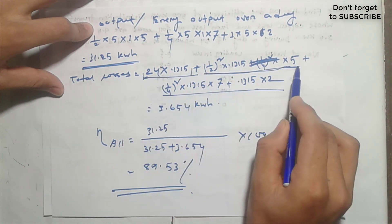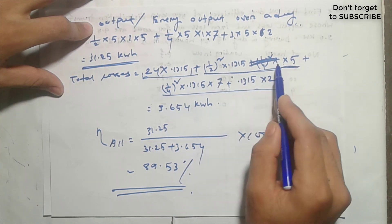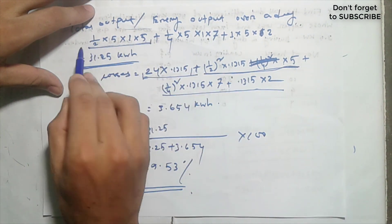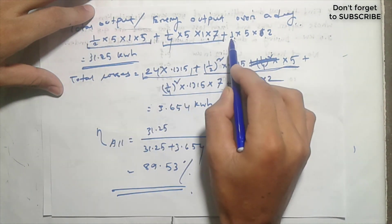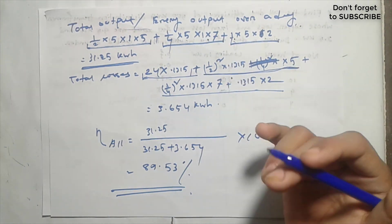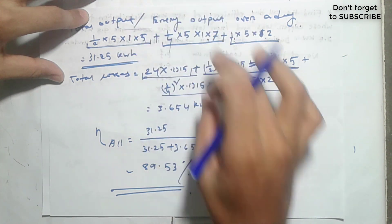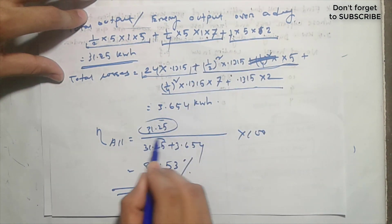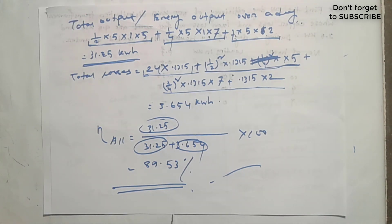This is the total copper loss and iron loss combined. The total output is used with the total losses to calculate the all-day efficiency. So, we will see you in the next video. Thank you.